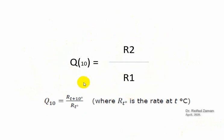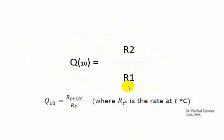Here's the formula for finding out the temperature coefficient. Q10 can be found by dividing the final rate of reaction by the initial rate of reaction. Here's another formula which means the same thing.